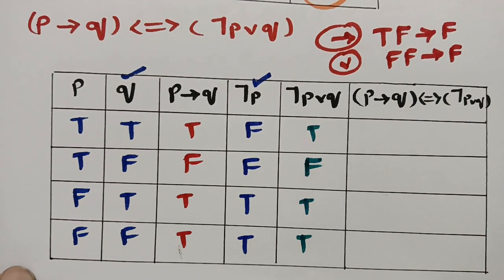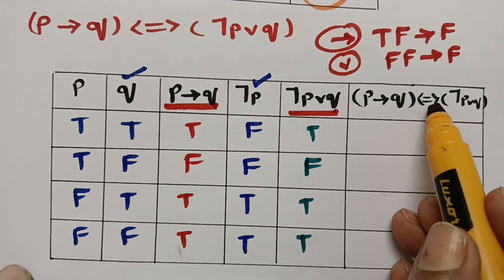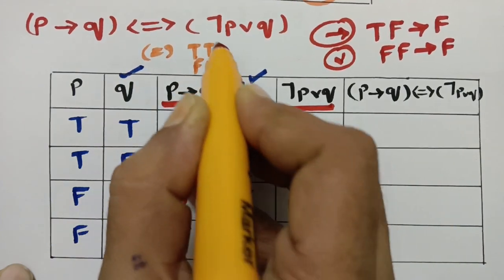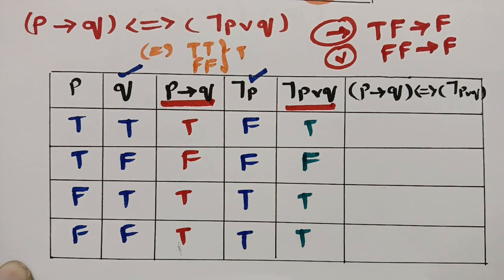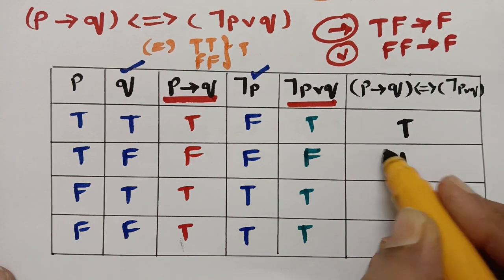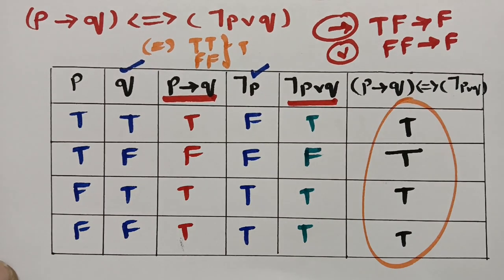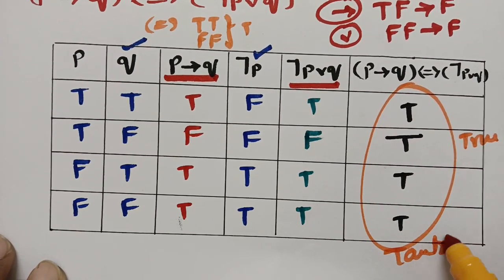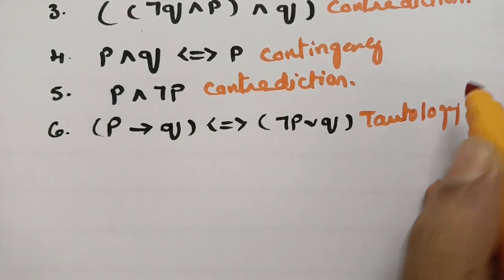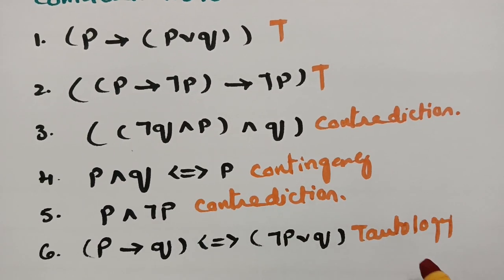So among P implies Q and (¬P or Q) with the biconditional symbol: two trues or two falses give true. All four rows give true, so the composition is always true and this is a tautology. To summarize: the first formula is tautology, second is tautology, third is contradiction, fourth is contingency, fifth is contradiction, and the sixth is tautology.